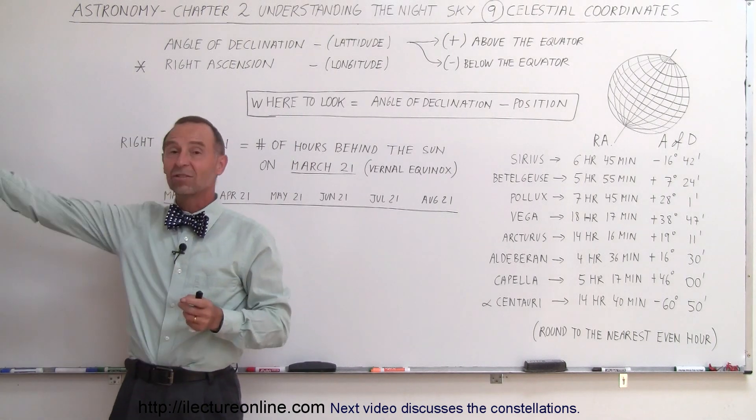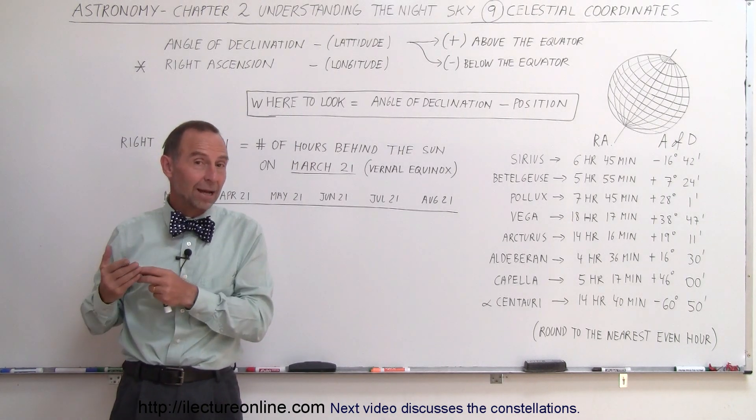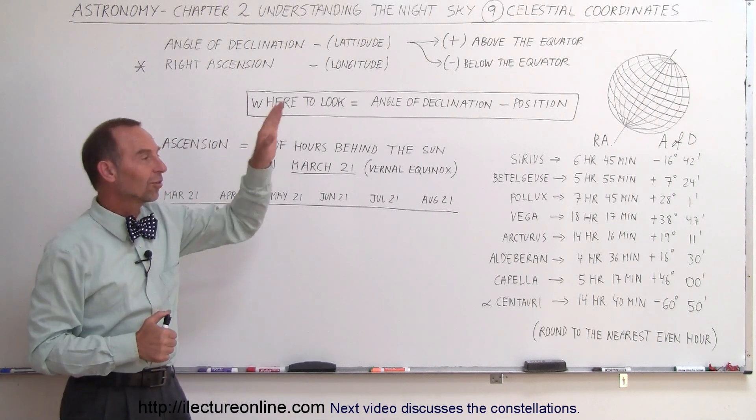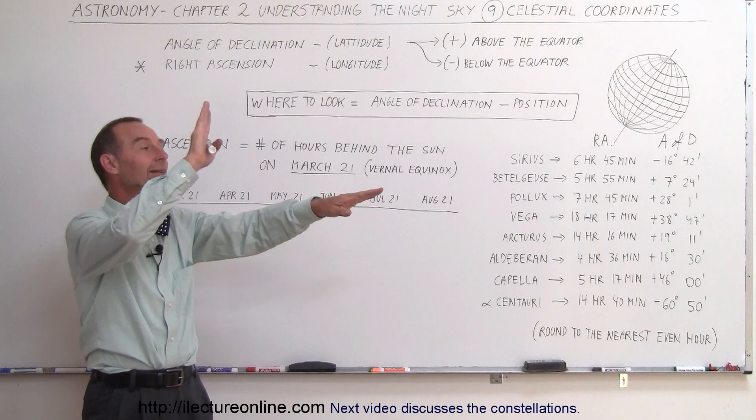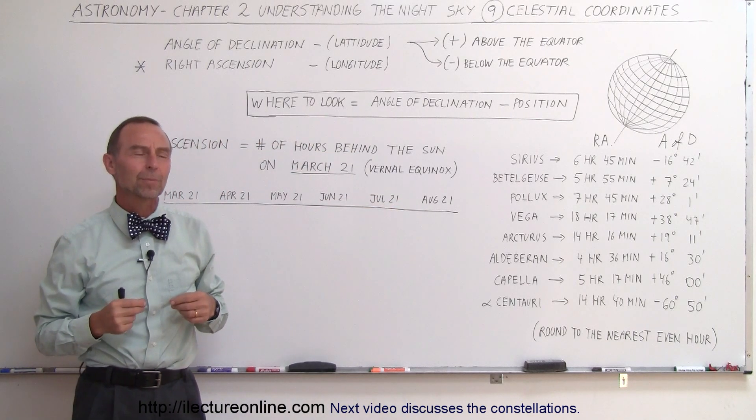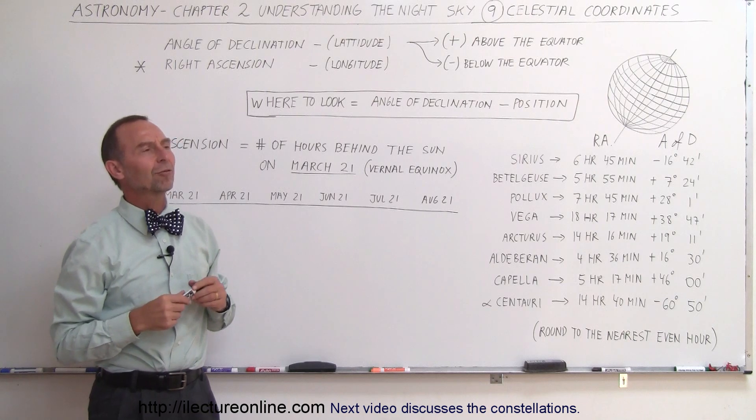For example, if the Sun rises at 8 o'clock in the morning and it's two hours behind, then the star will rise at 10 o'clock in the morning. Or if the Sun sets at 6 o'clock at night, then the star will set at 8 o'clock at night. It's two hours behind.